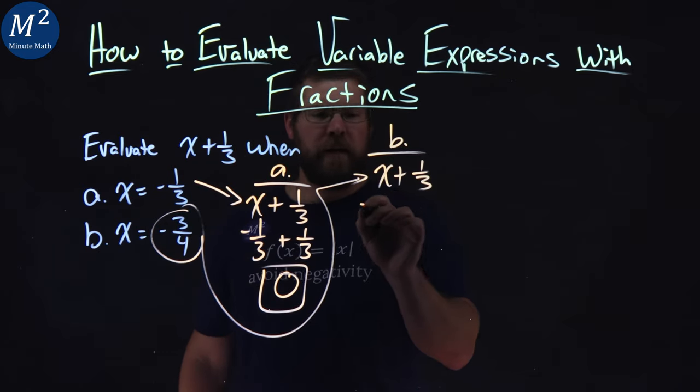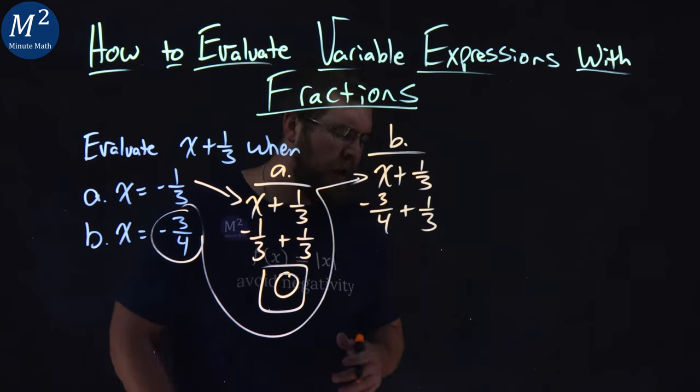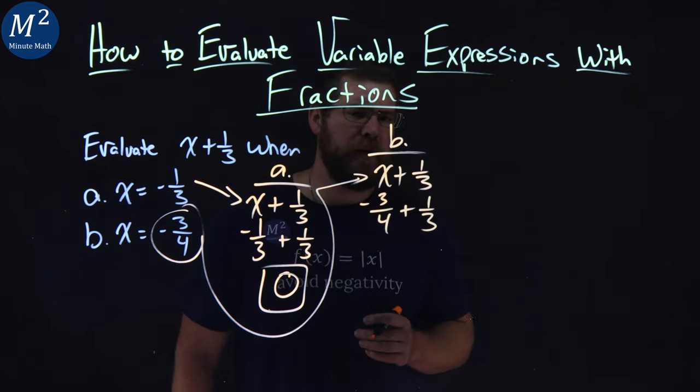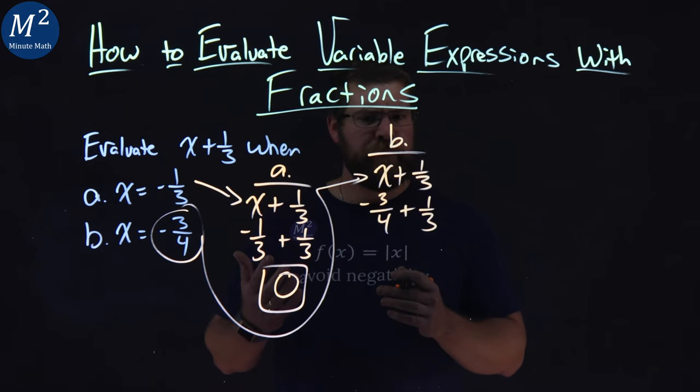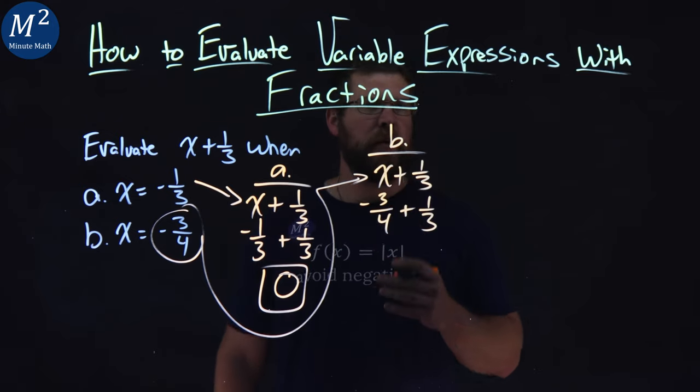Well, from there, negative 3/4 plus 1/3. Now, we don't have a common denominator here, so we define one. Well, 4 and 3 both can be multiplied to equal 12.